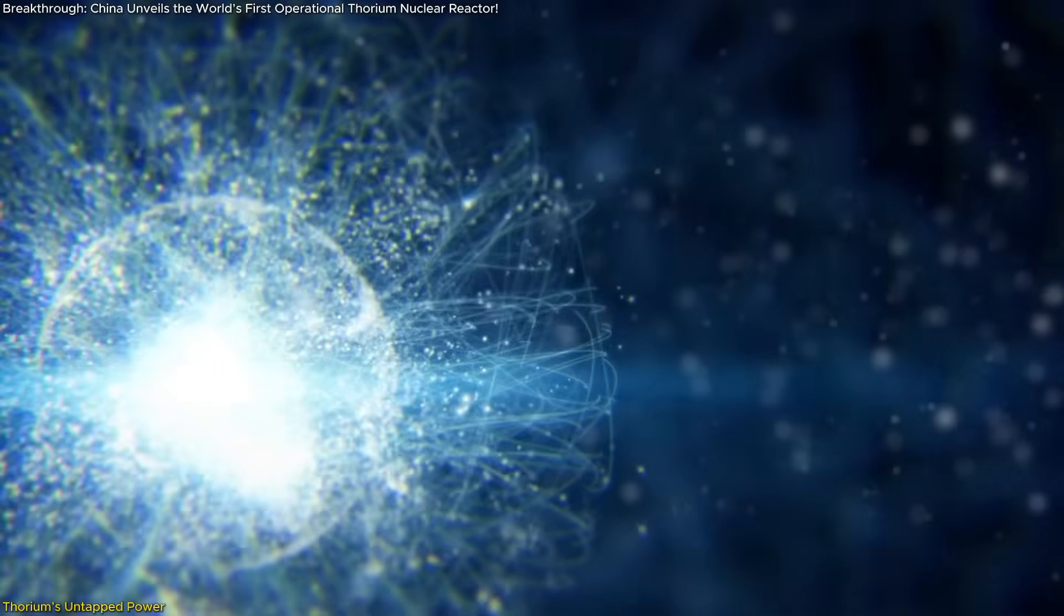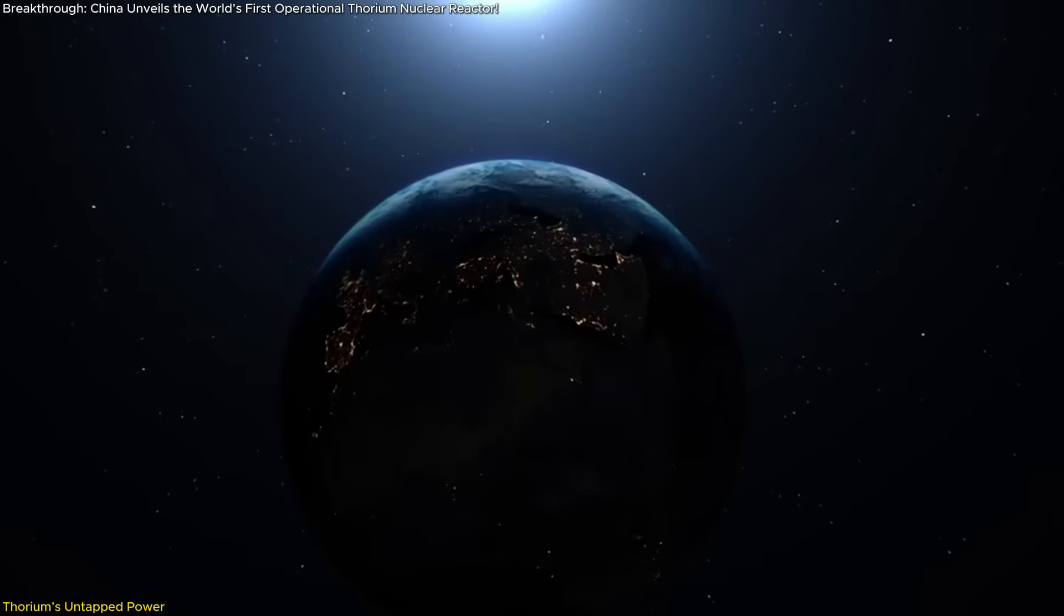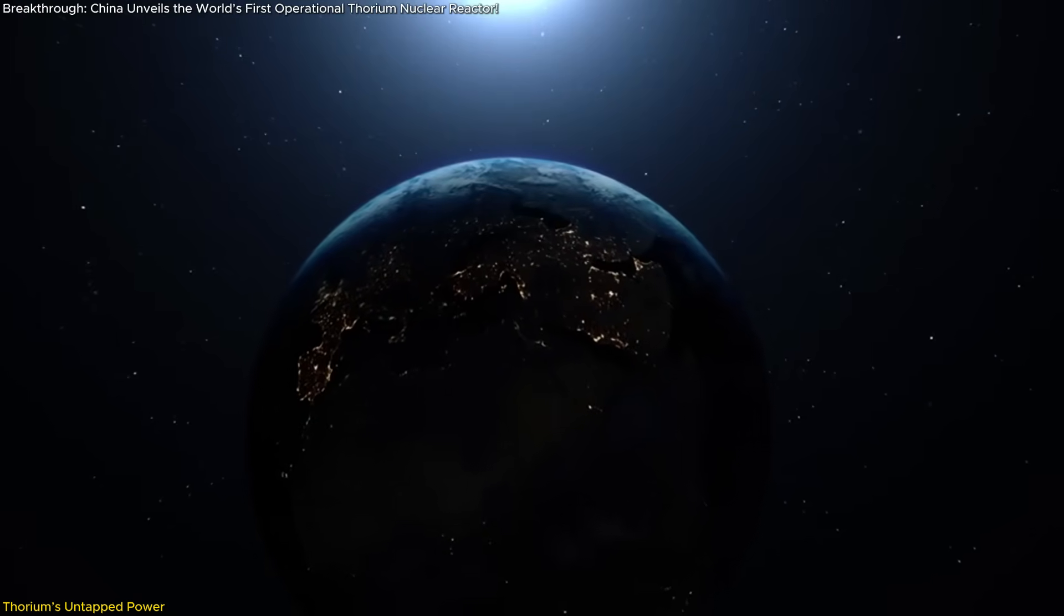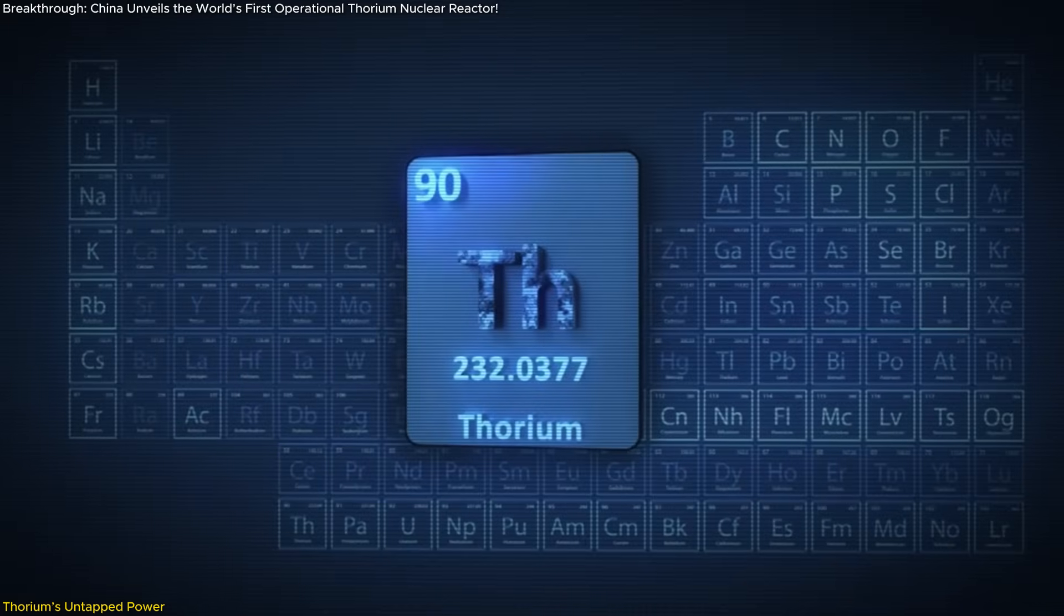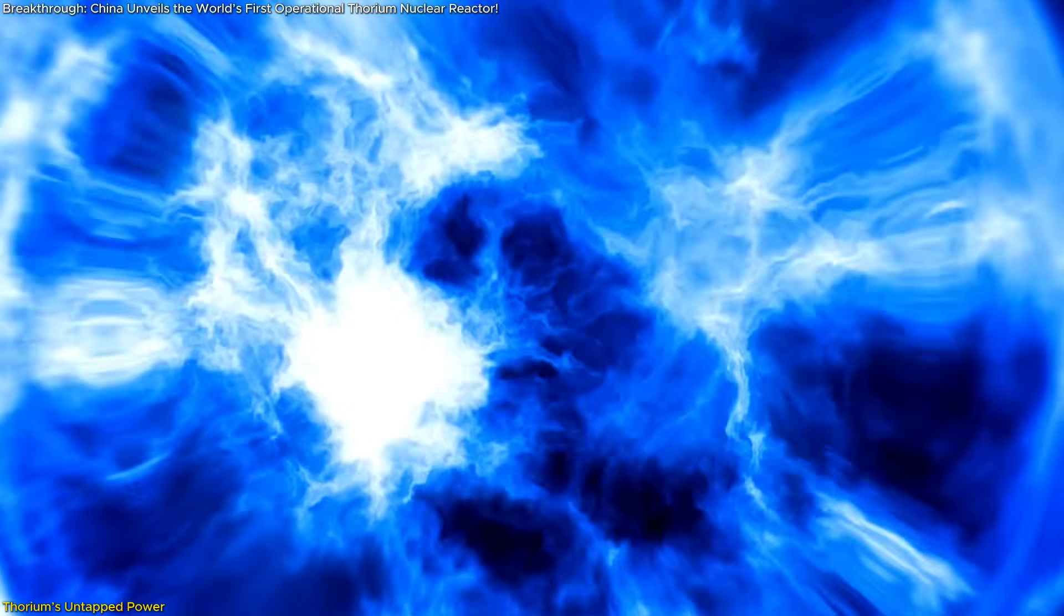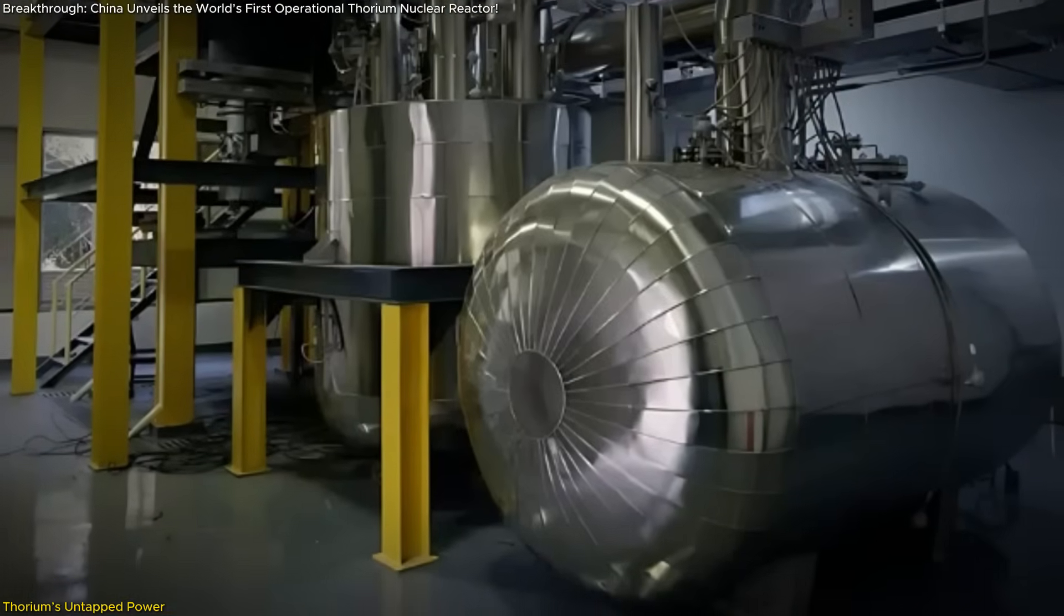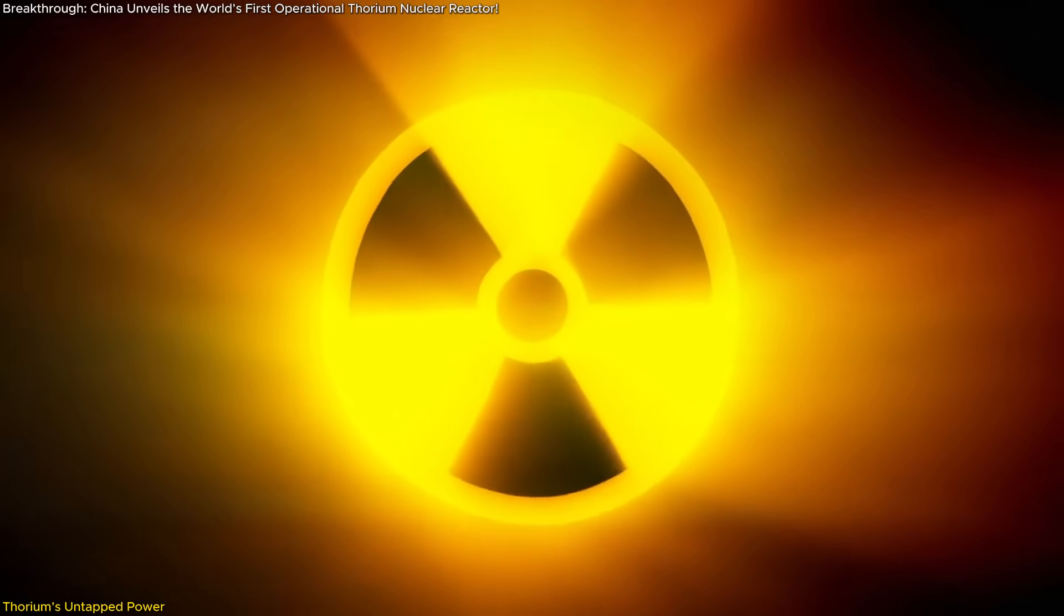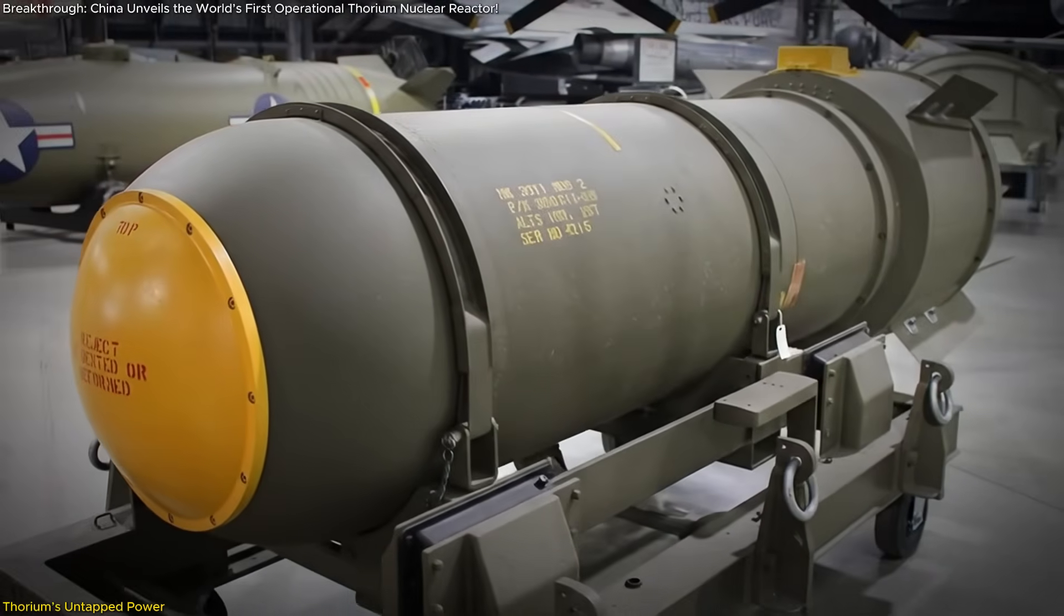So why thorium? For starters, it's about three to four times more abundant in Earth's crust than uranium. That alone makes it a strategic resource for any nation seeking long-term energy independence. But what truly sets thorium apart isn't just availability. It's its inherent safety and clean energy profile. When used in a molten salt reactor, thorium produces significantly less long-lived radioactive waste, and it can't sustain a nuclear weapons program.